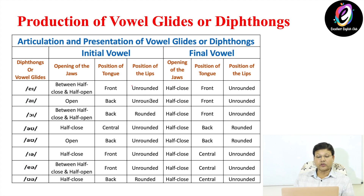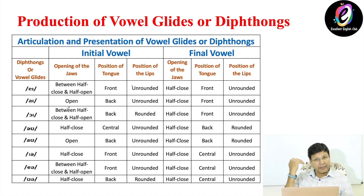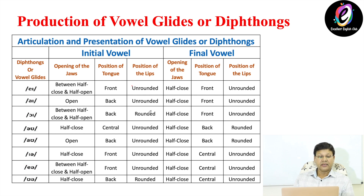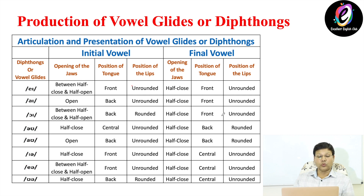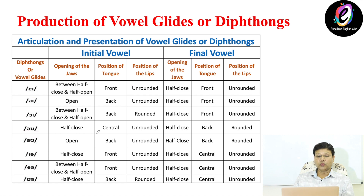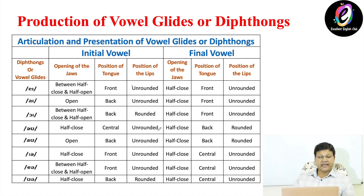For the diphthong schwa-U: the schwa is half close, central, and unrounded. Then U is half close, back, and rounded. Similarly for A-U: when we produce A, it is open, back, and unrounded. U is half close, back, and rounded. For E-E-A: E-E is half close, front, and unrounded, and the second vowel schwa is half close, central, and unrounded.